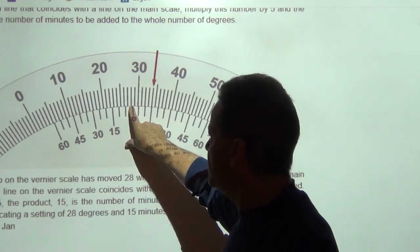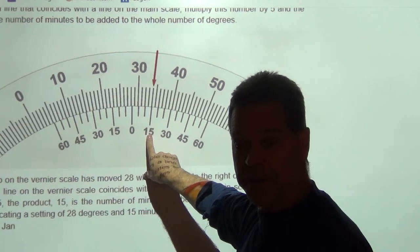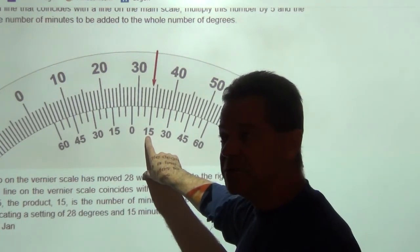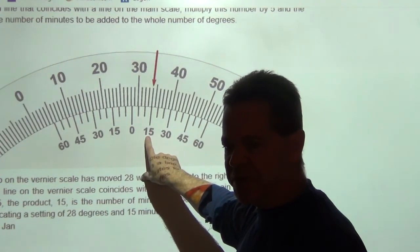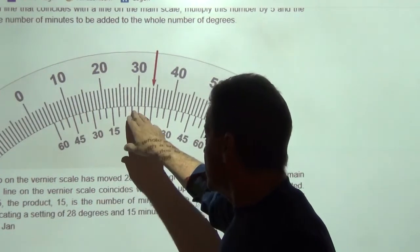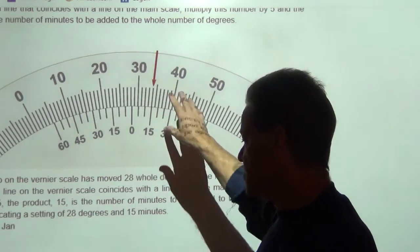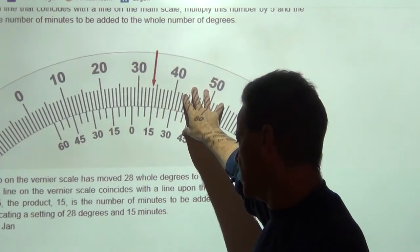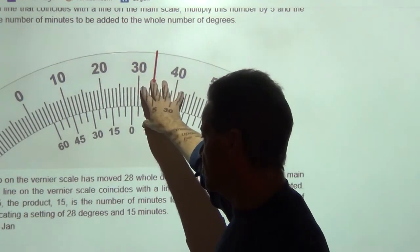Okay? And then 15 minutes is 15 sixtieths of a degree. It would be, it's one-fourth of a degree. It would be 28 degrees, 28 and one-fourth degrees would be the measurement that's indicated by this particular vernier scale.